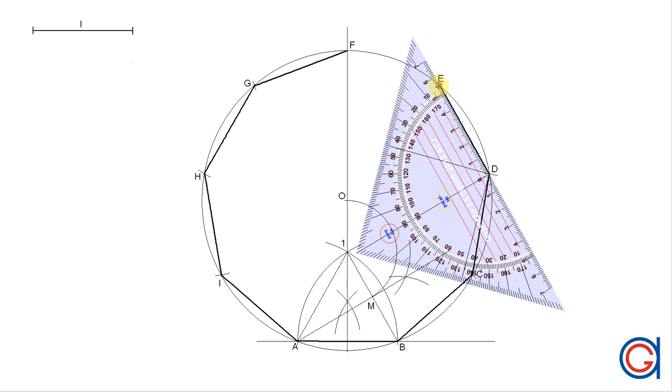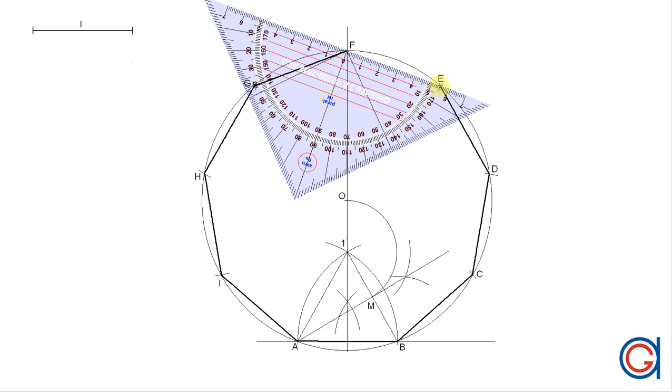And finally we close our nonagon, our nine-sided regular polygon. E to F.